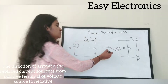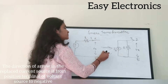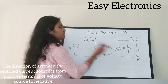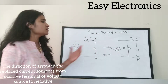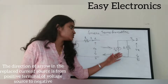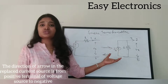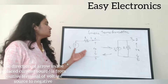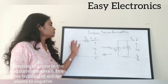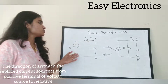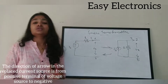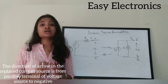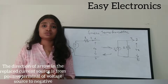Similarly, using the same way, you can convert a current source. If you have a current source, you can convert it into a voltage source. So this is called source transformation.